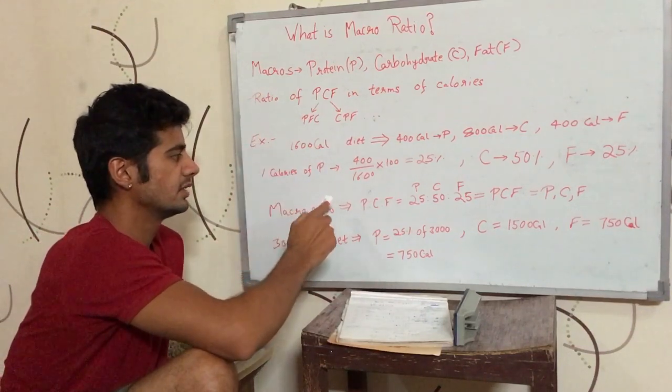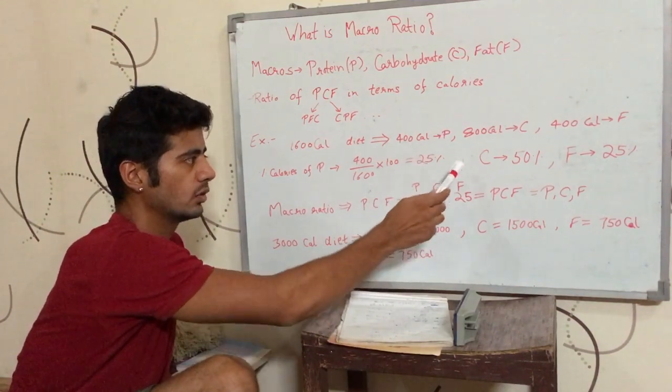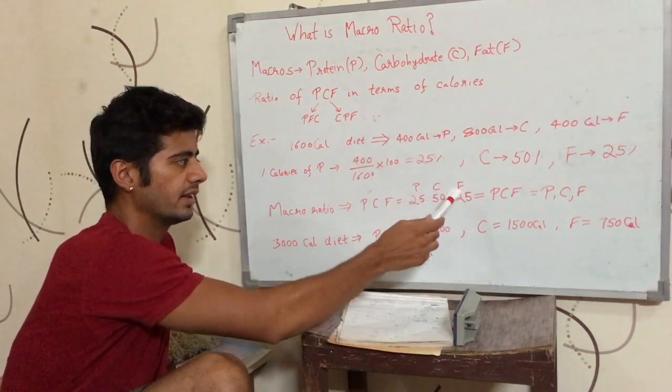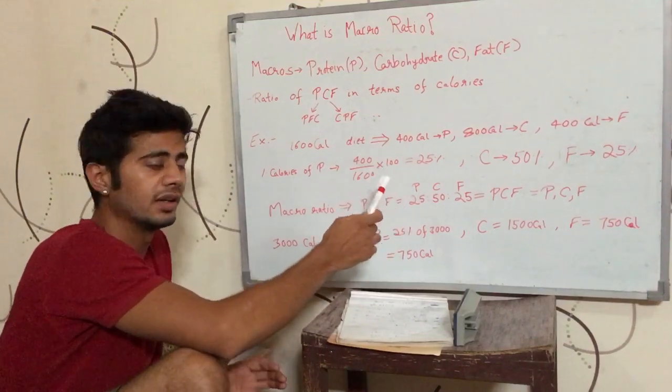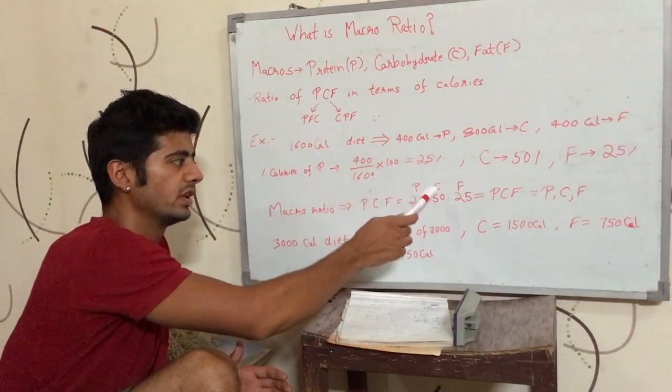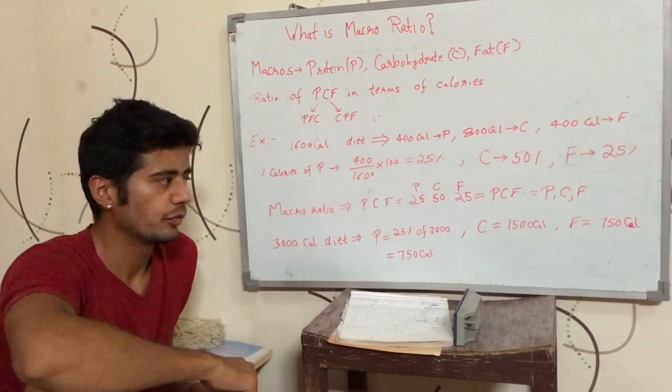So now, what the macro ratio is? PCF ratio is 25, 50, 25. That means, out of the total calories, 25% comes from protein, 50% comes from carbohydrates and 25% comes from fat.